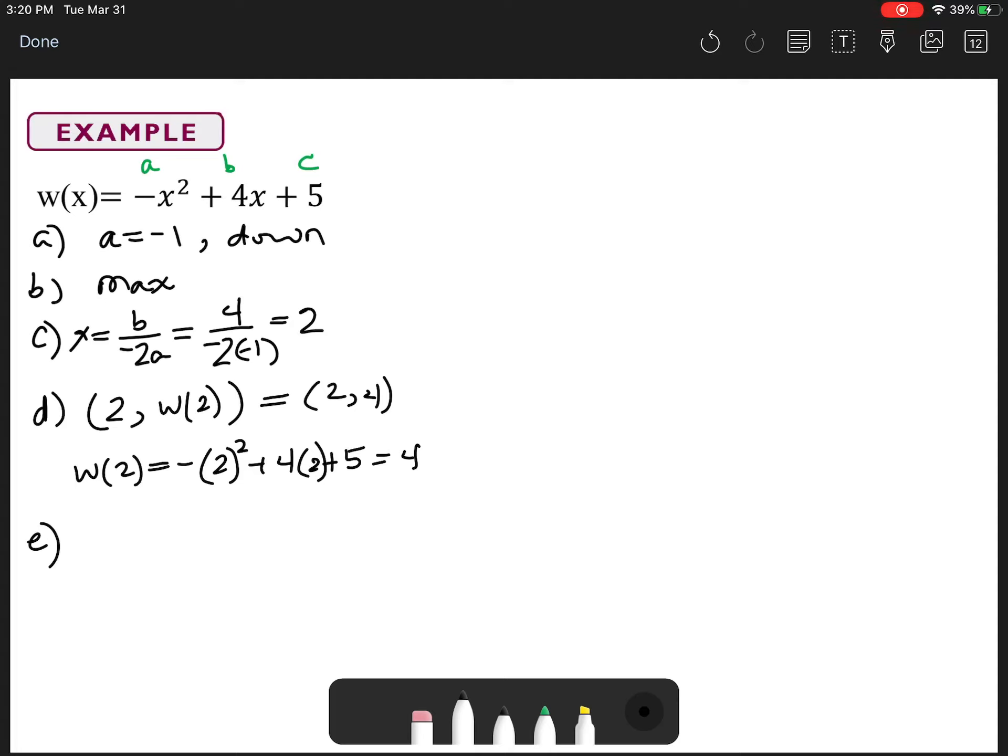Part E says what are your intercepts? All right. So, the easiest intercept to calculate is the y intercept. All right. So, the y intercept, when your function is in standard form like this - standard form in Ax squared plus bx plus c - the y intercept is going to equal c. So, the y intercept is c equal five. And as a point, the y intercept is zero, five.